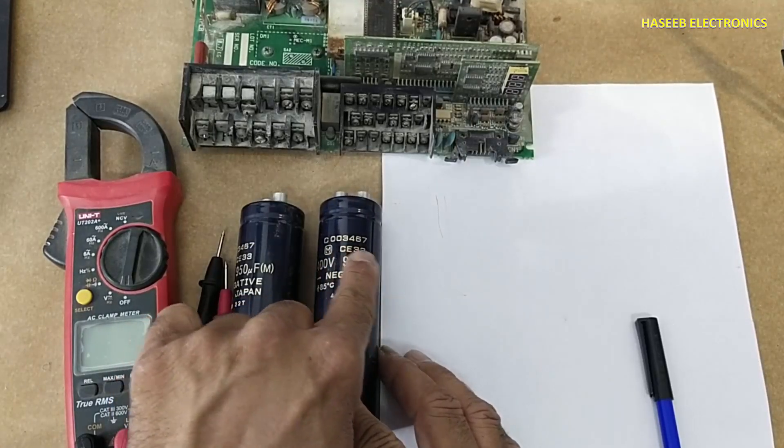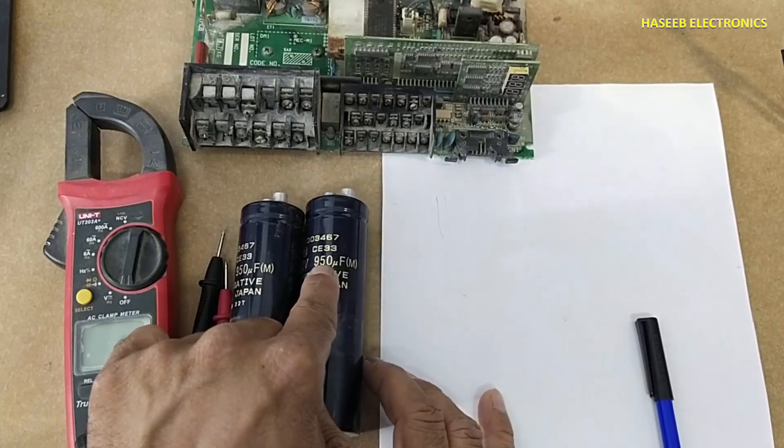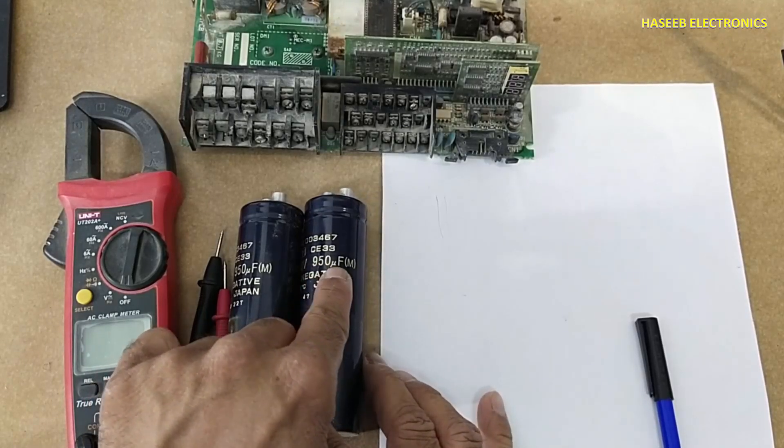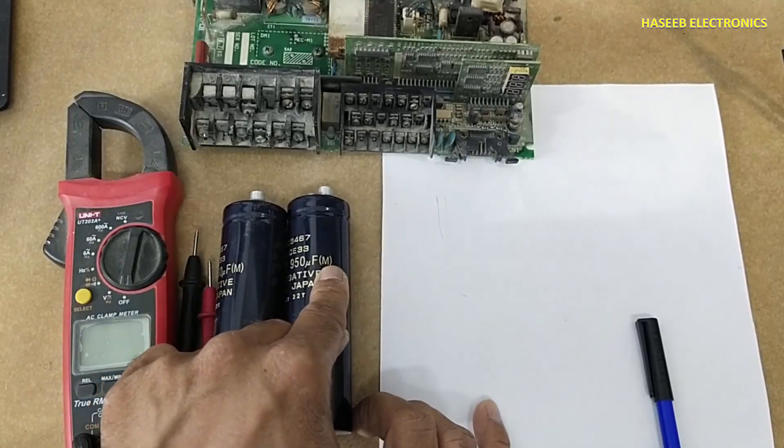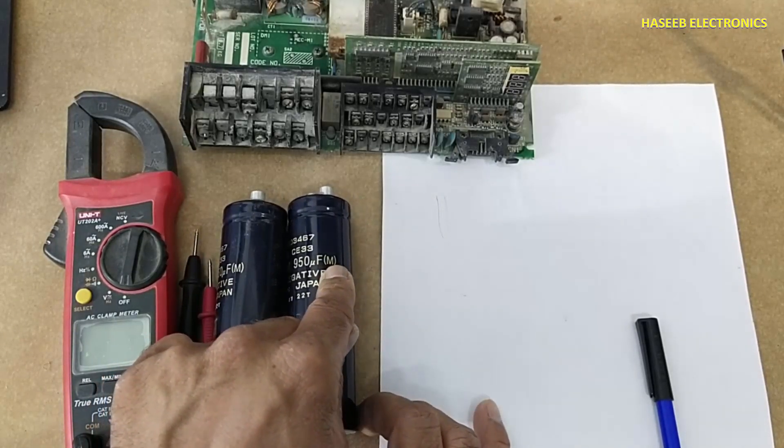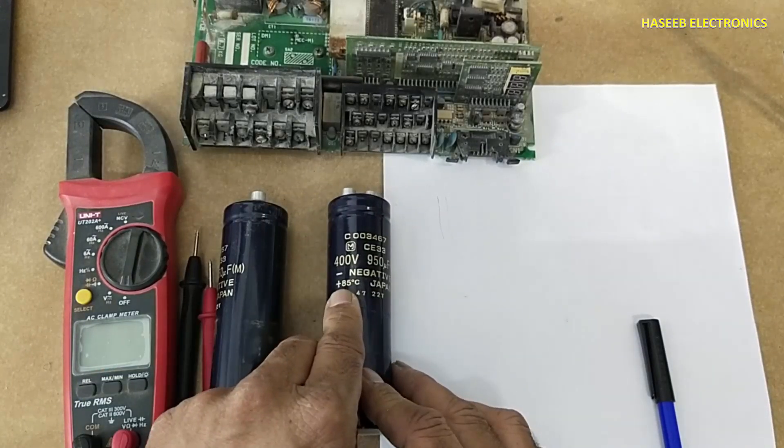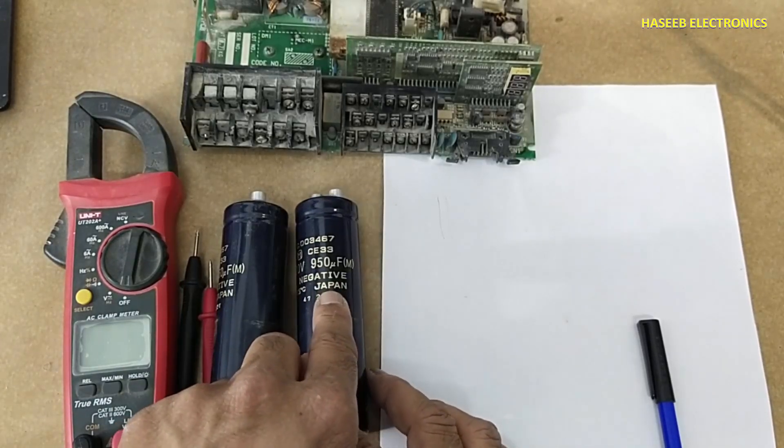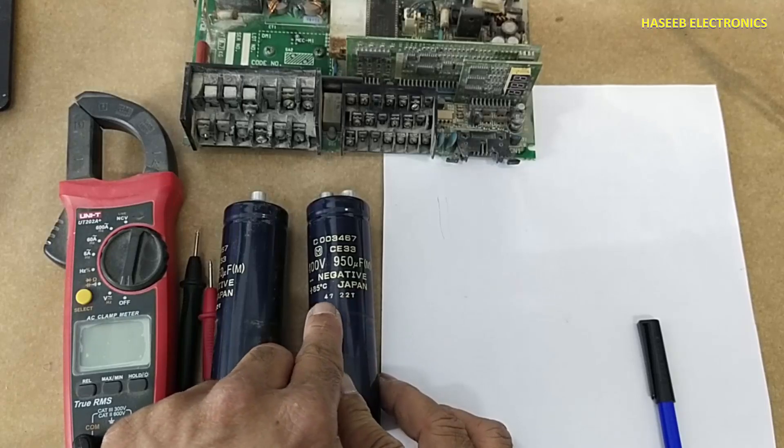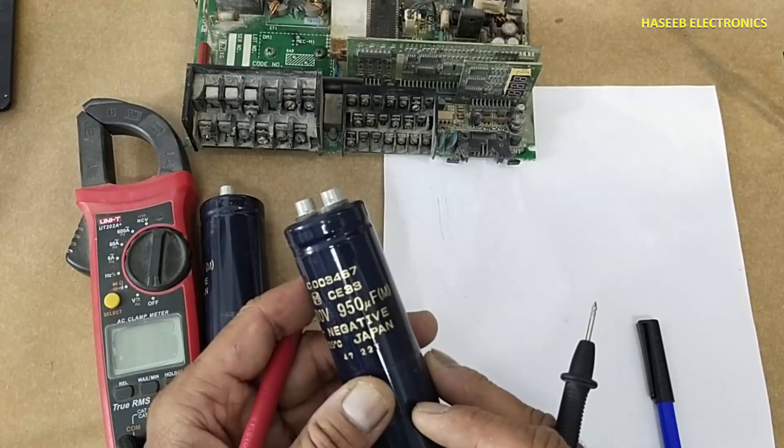Here's the lot number of capacitors in series, then voltage rating, capacitance 950 microfarad, then in bracket 'M' - what is M? It is tolerance. There's polarity marking, 85 degree Celsius working temperature, country of origin, and some other codes.